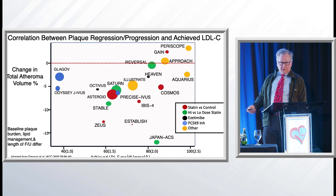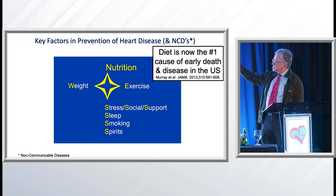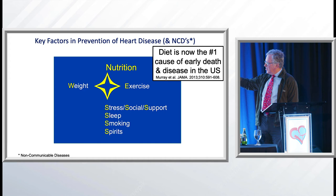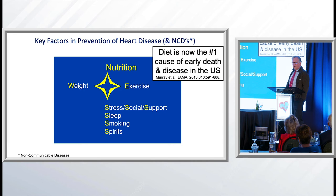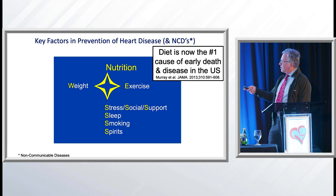If you look at the key factors for heart disease now: diet is the number one cause of early death and early disease in this world. There are other issues too. Being a simple cardiologist, I put them in simple terms: north, south, east, west — Nutrition, Exercise, Sleep, and Stress. Who is not stressed in the last two years? Anybody? And also smoking, spirits, and weight. Obviously there are a lot of factors that lead to disease.